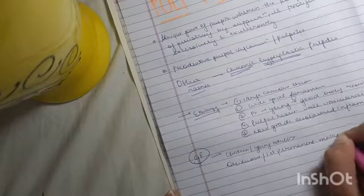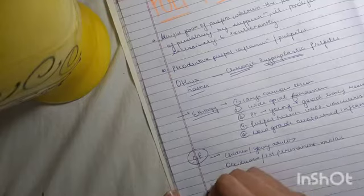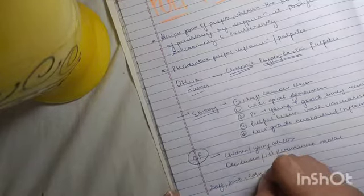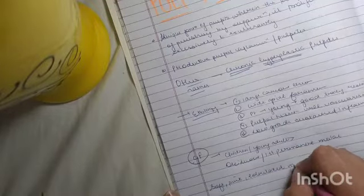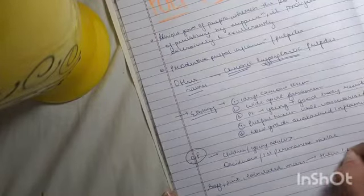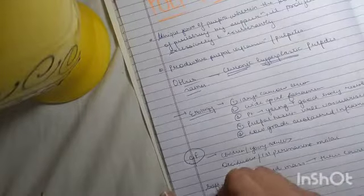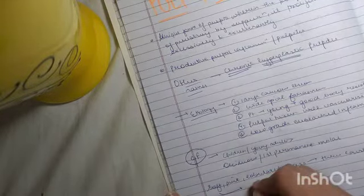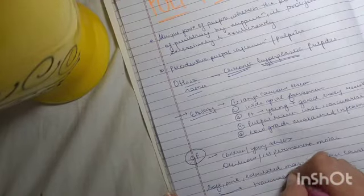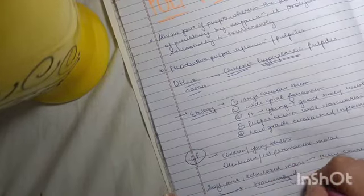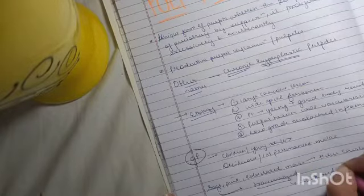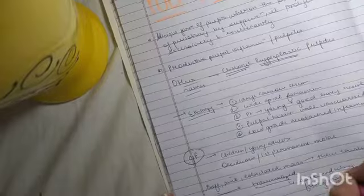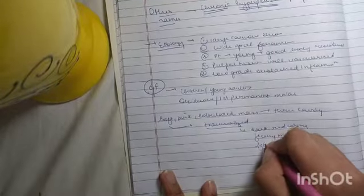This basically grows like a soft pink lobulated mass which grows through the cavity. If this is traumatized, then you will see that it will have a dark red color. It will be fleshy and there will be fibrinous exudate.